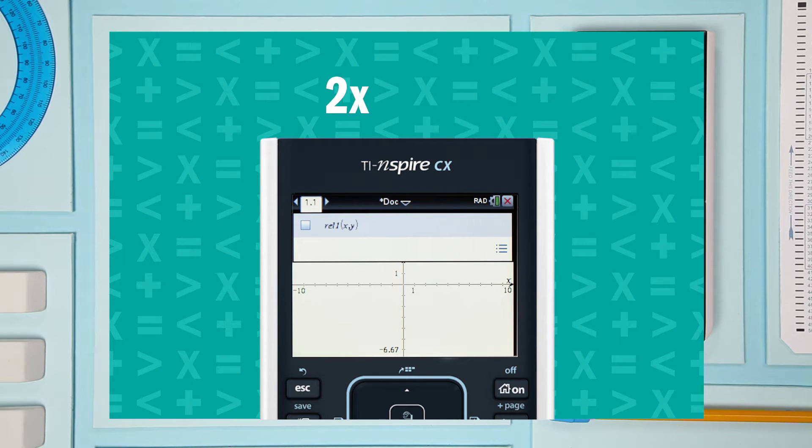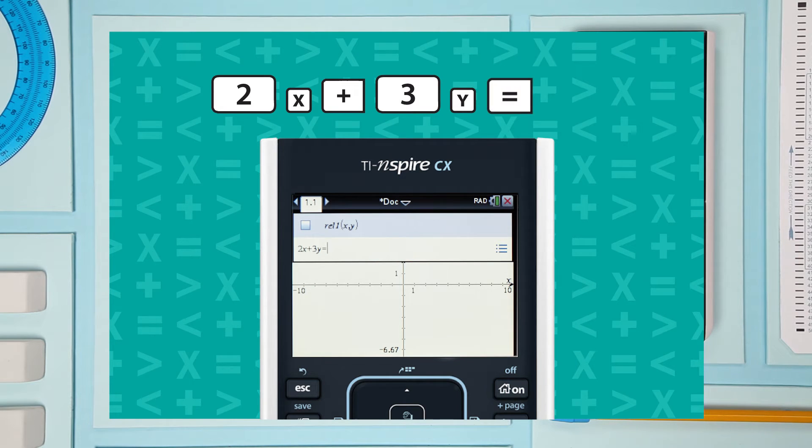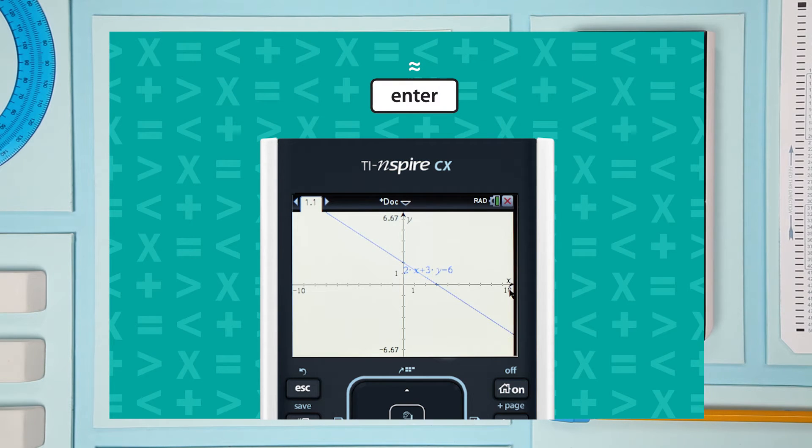Using 2x plus 3y equals 6 as our example. Punch it in. 2x plus 3y equals 6. And enter. And there you go.